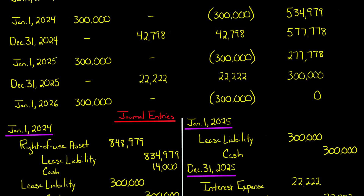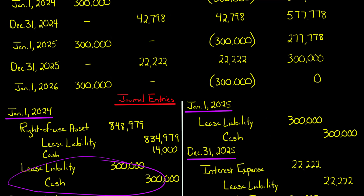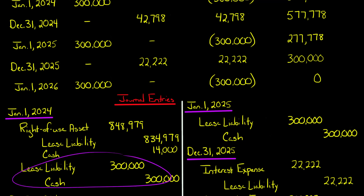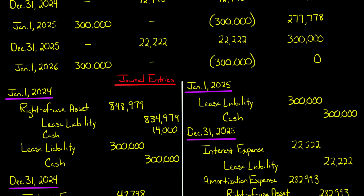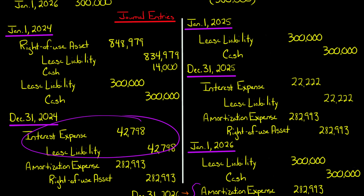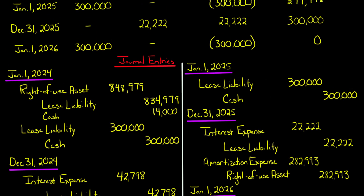We're also going to have a journal entry for that first lease payment on that same day. You could combine all of this into a single entry, but I separate it into two entries to make it a little easier to understand what's going on. The debit to the lease liability and credit to cash is just what happens when the very first lease payment is made at the start of the lease. The initial right of use asset is different because of the initial direct costs, and so the amortization expense is also going to be different. The interest expense, however, is the same — the lease amortization table doesn't change.